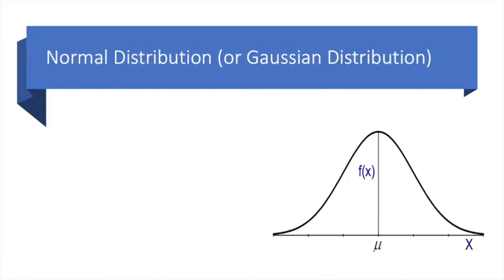So let's return to the normal distribution. As I said earlier, it is a famous and most commonly used data distribution. As you can see, it looks like a bell, so its shape is also called a bell curve.